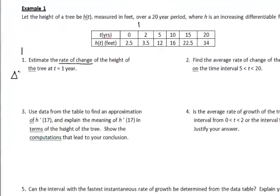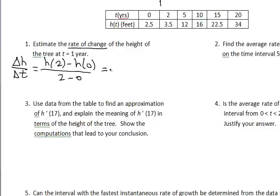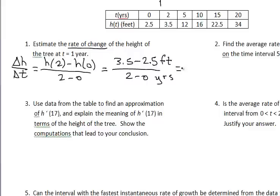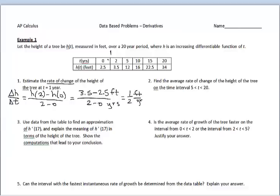The best we can do to estimate the rate of change is to use an average rate of change — delta y over delta x, or in this case, change in height over change in time. This is a typical AP question. So that looks like h(2) minus h(0) all over 2 minus 0. h(2) is 3.5 feet and h(0) is 2.5 feet, over 2 minus 0 years. Cleaning this up, the estimate is 1/2 foot per year. We choose two points on either side of t = 1, so we used t = 0 and t = 2.